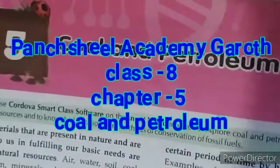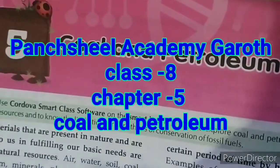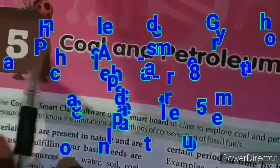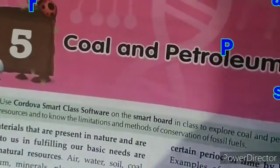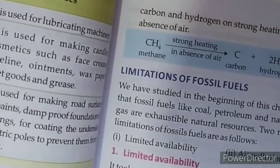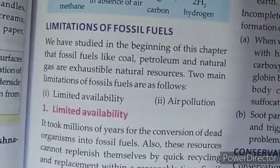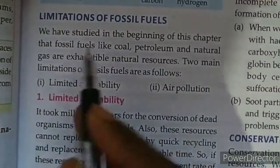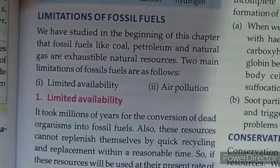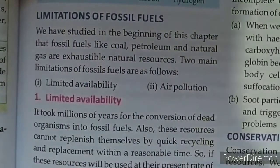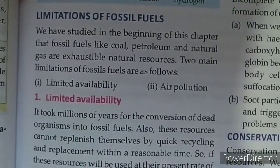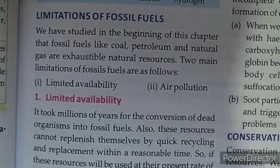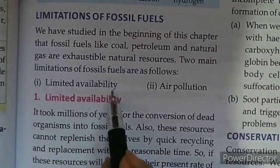Hello students, welcome once again in our classes. Let's continue our Chapter 5: Coal and Petroleum. We are discussing the limitations of fossil fuels. We have studied in the beginning of this chapter that fossil fuels like coal, petroleum and natural gases are exhaustible natural resources. Two main limitations of fossil fuels are as follows: first one is limited availability, and second one is air pollution.